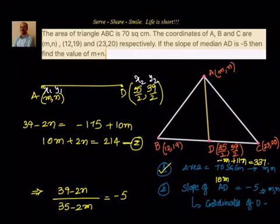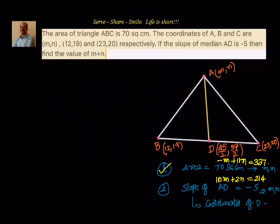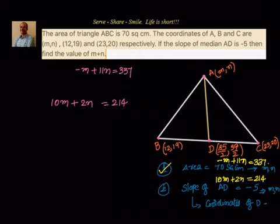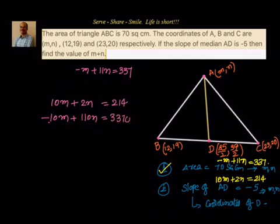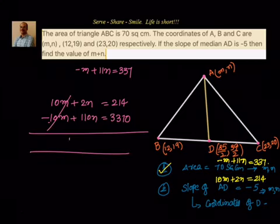Condition number 2 is: 10M + 2N equals 214. Now we have both conditions. Condition 1: minus M + 11N = 337. Condition 2: 10M + 2N = 214. Using the elimination method, multiply condition 1 by 10: minus 10M + 110N = 3370. Adding to condition 2: 112N = 3584.